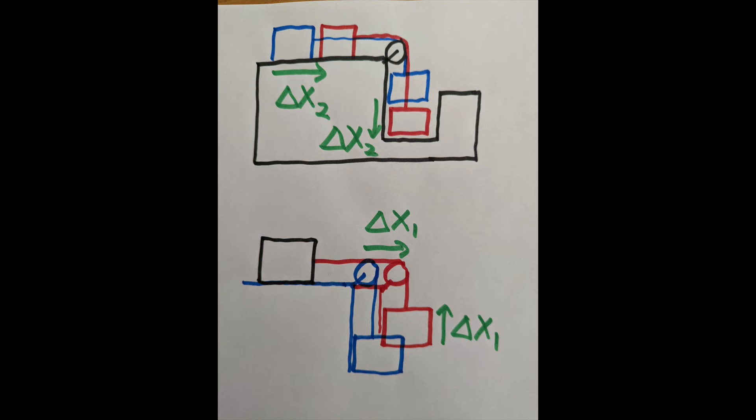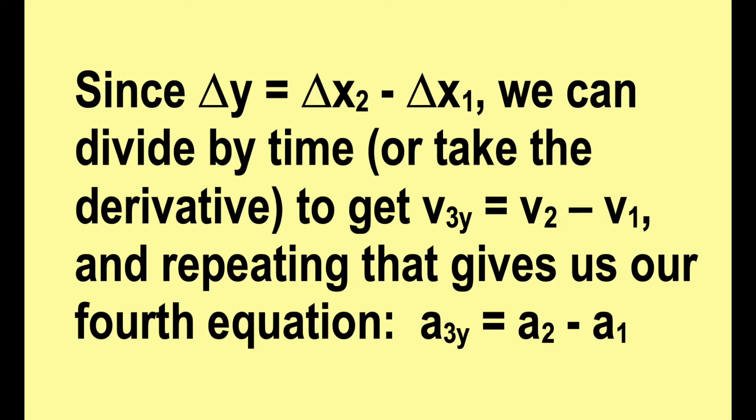For the second step, the lower picture shows m2 in black holding still, while m1 and m3 both move to the right, and m3 moves up. Putting these together, you can see that overall, m3 moves down delta x2 minus delta x1. Since that is true, we can divide by time, or take the derivative if you know how, to get velocity 3y equals v2 minus v1. And repeating that process gives us the equation we need: a sub 3y equals a2 minus a1. That's our fourth equation.